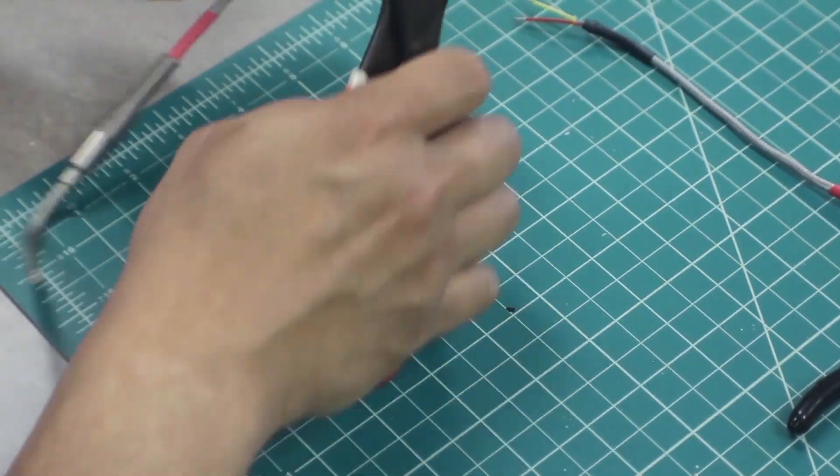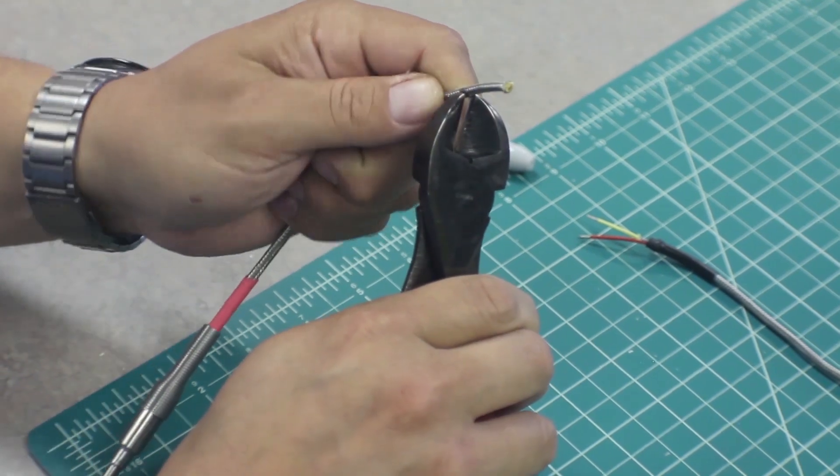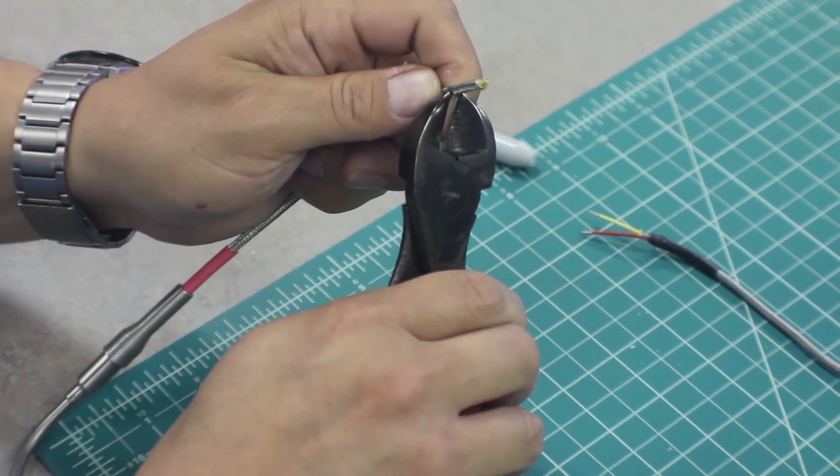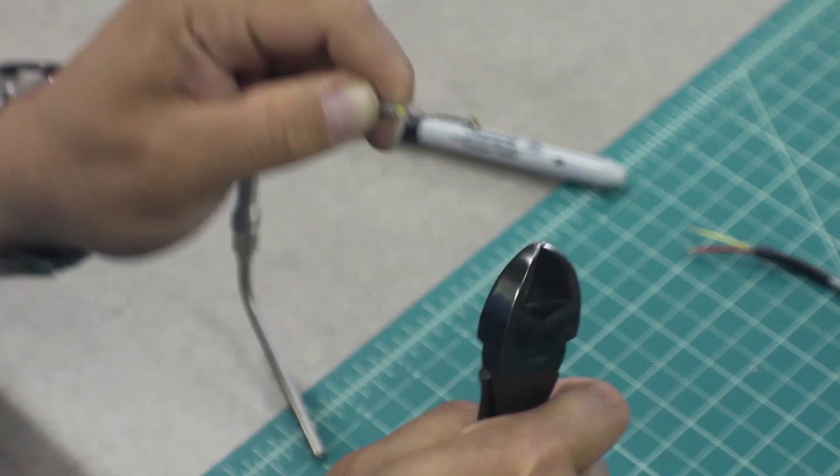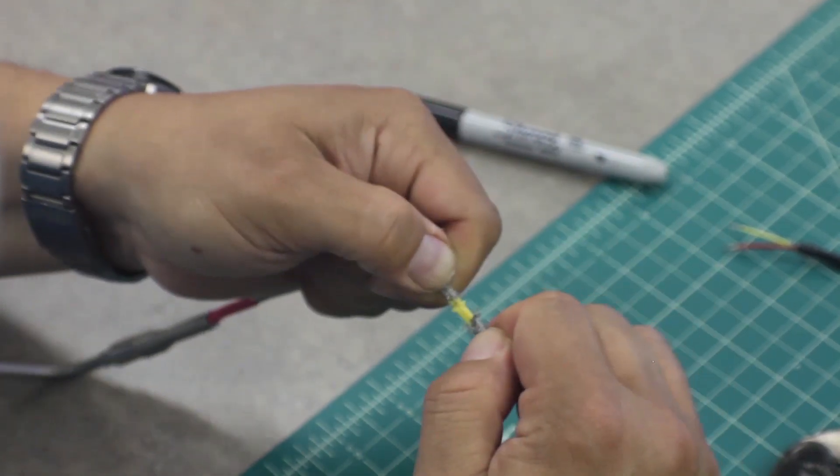Next, using the diagonal pliers, starting at the second mark, carefully trim and remove the stainless steel outer braiding. Take extra caution not to nick any of the internal wires. This can cause a short or reading errors.